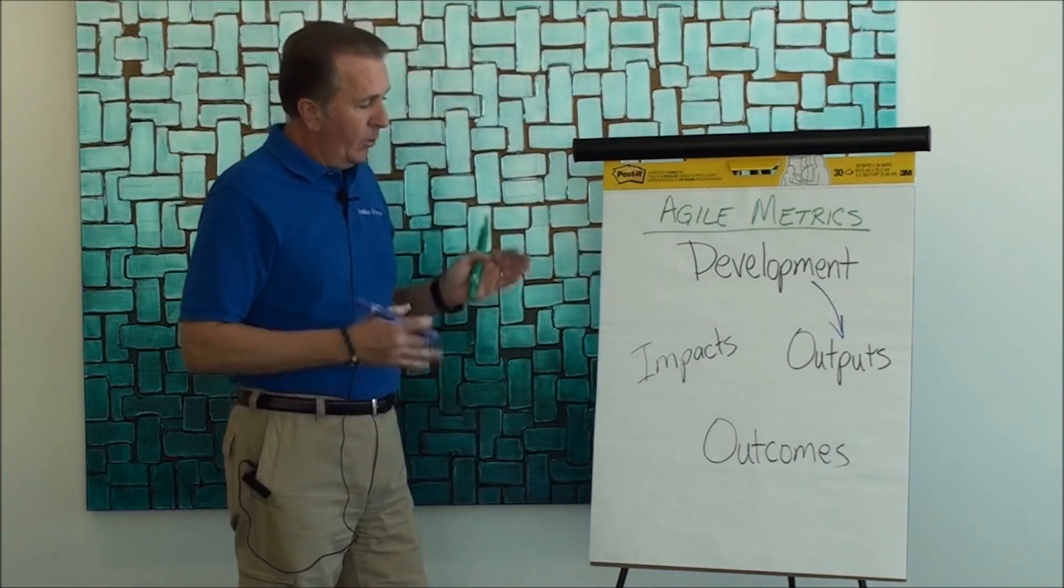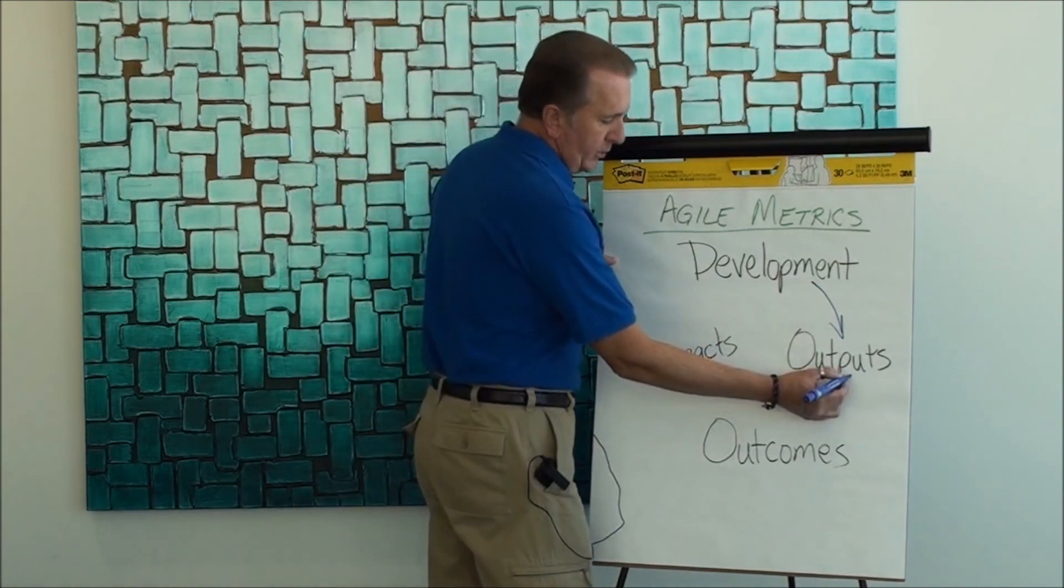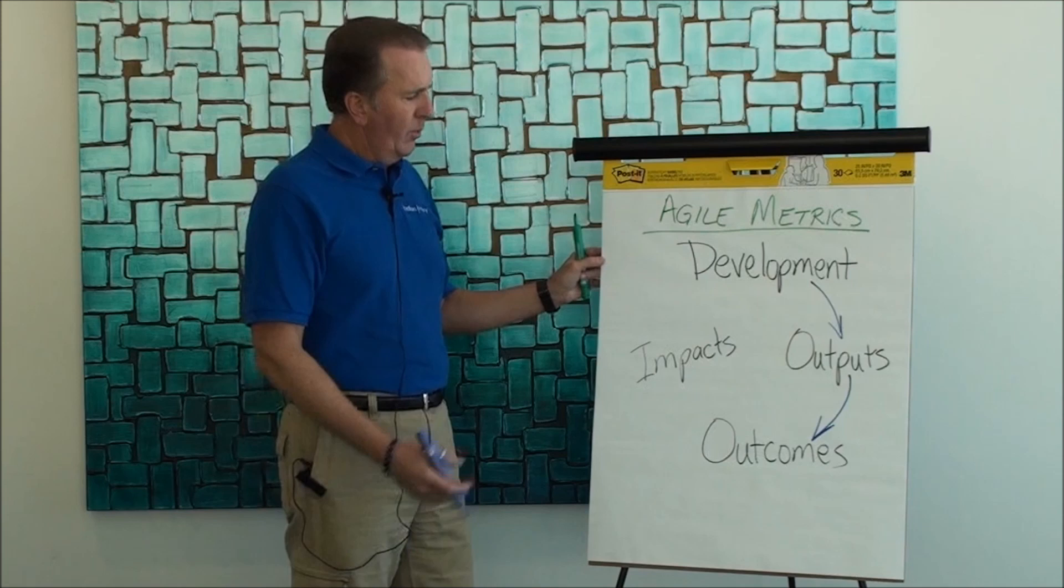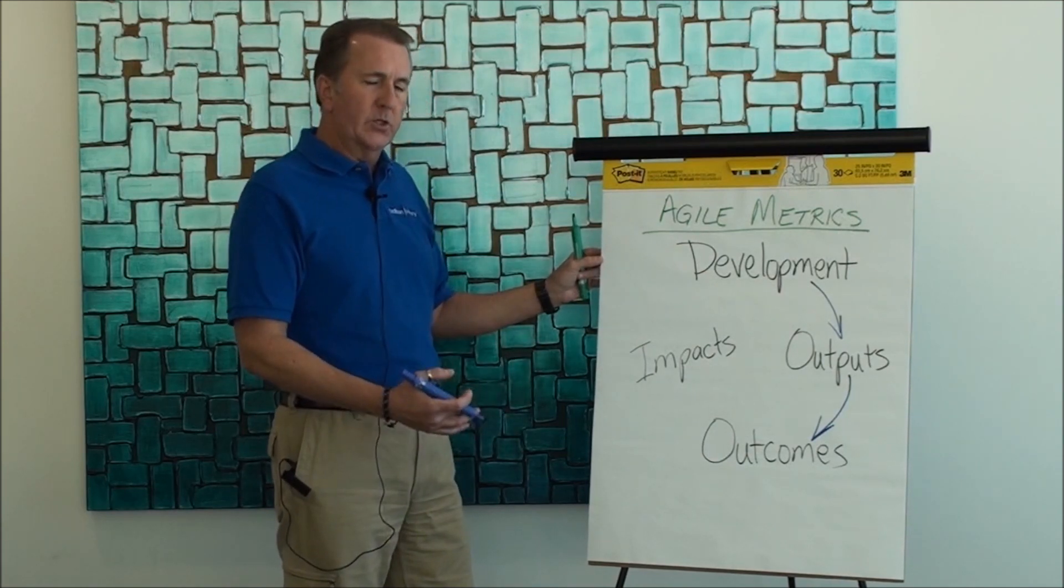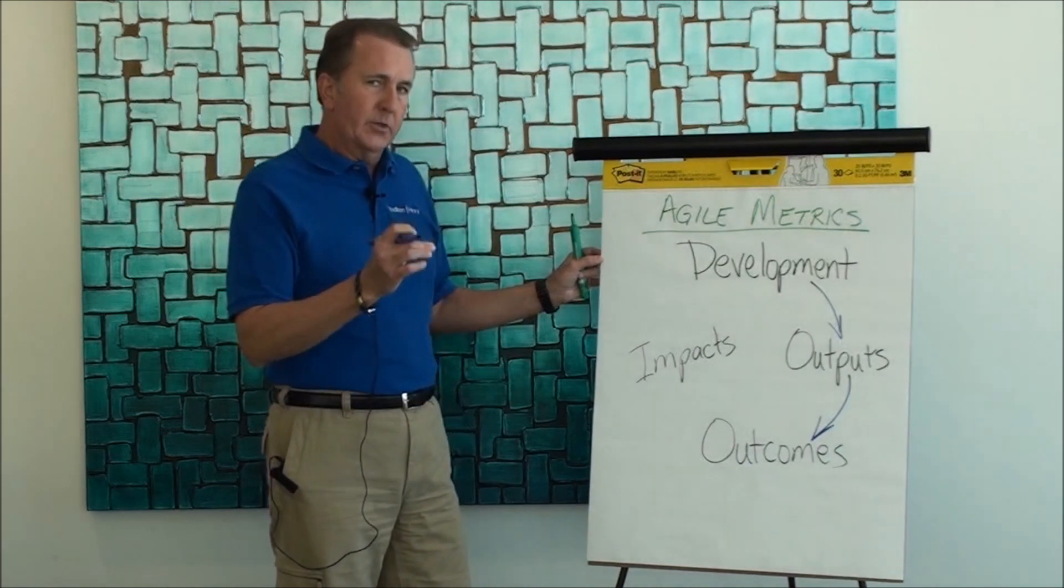Those outputs are leaving development and then have the opportunity to affect users and customers, and we want to call those outcomes. We've been talking for a while about differentiating between outputs and outcomes, but this model adds a little bit of a twist.